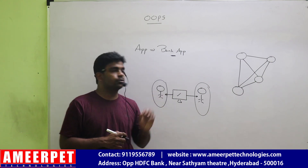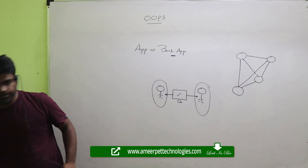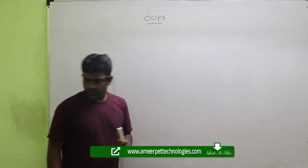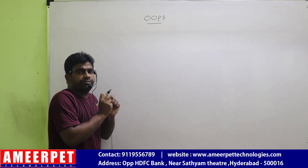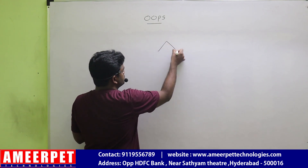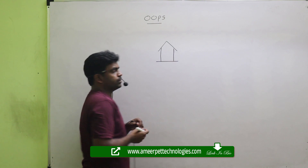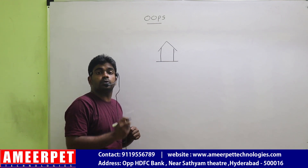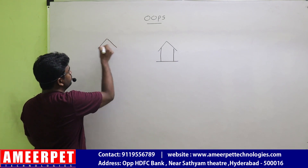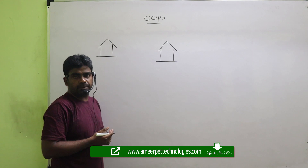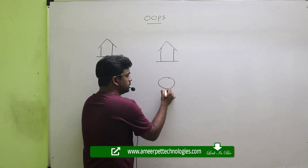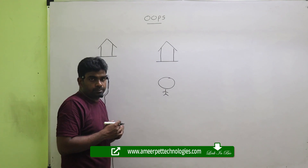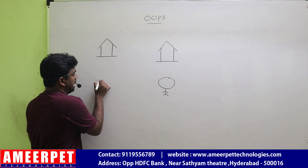How can we define objects in object-oriented programming? If you want to define an object — for example, I just want to construct one house. Can we start construction directly? No, it's impossible. It is impossible to construct a house without a plan. So first of all, we need to prepare a plan. Similarly, if I want to create one account representing one account holder, can we create that account directly? No, impossible. For that, one plan is required.